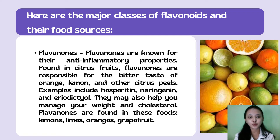Flavanones are known for anti-inflammatory properties. Found in citrus fruits, flavanones are responsible for the bitter taste of orange, lemon, and other citrus peels. Examples include hesperitin, naringenin, and eriodictyol. They may also help you manage your weight and cholesterol. Flavanones are found in lemons, limes, oranges, and grapefruit.